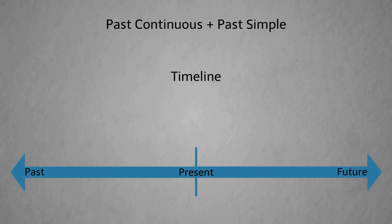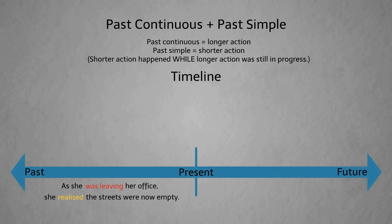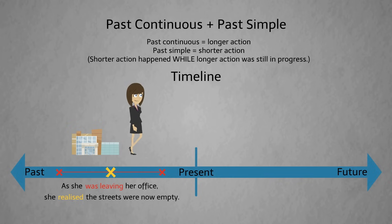We can also combine the past continuous with the past simple. The past continuous refers to a longer background action or situation, while the past simple refers to a shorter action that happened while the longer action was still happening. For example, 'as she was leaving her office, she realized the streets were now empty.' Alyssa leaving her office is the longer action, and her realizing the streets were empty is the shorter action. She didn't stop leaving the office when she noticed this.